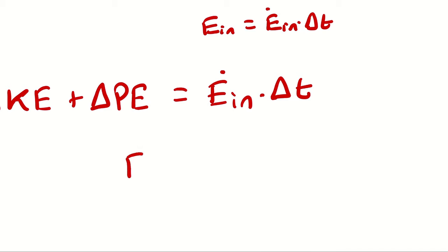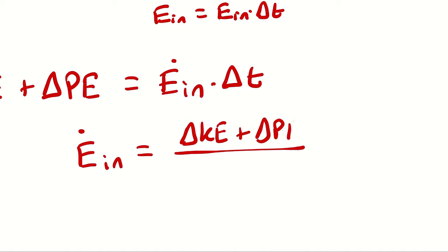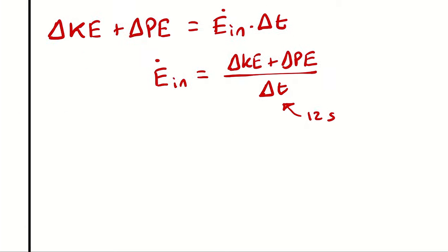If we solve this for E-dot-in, the average entering energy rate must be delta KE plus delta PE divided by duration. The power required to accomplish this process is the change in kinetic and potential energy divided by the duration of the process. The duration is 12 seconds in all three cases. All I have to do now is determine the kinetic energy change and potential energy change for all three parts.